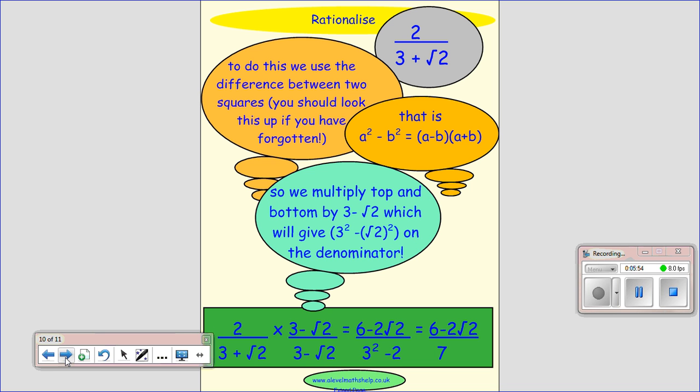Now, a slightly harder one. You need to remember what the difference of two squares is. If you don't remember this or if you've forgotten, you should look it up. But basically, when we have a squared minus b squared, it factorizes to a minus b times a plus b.